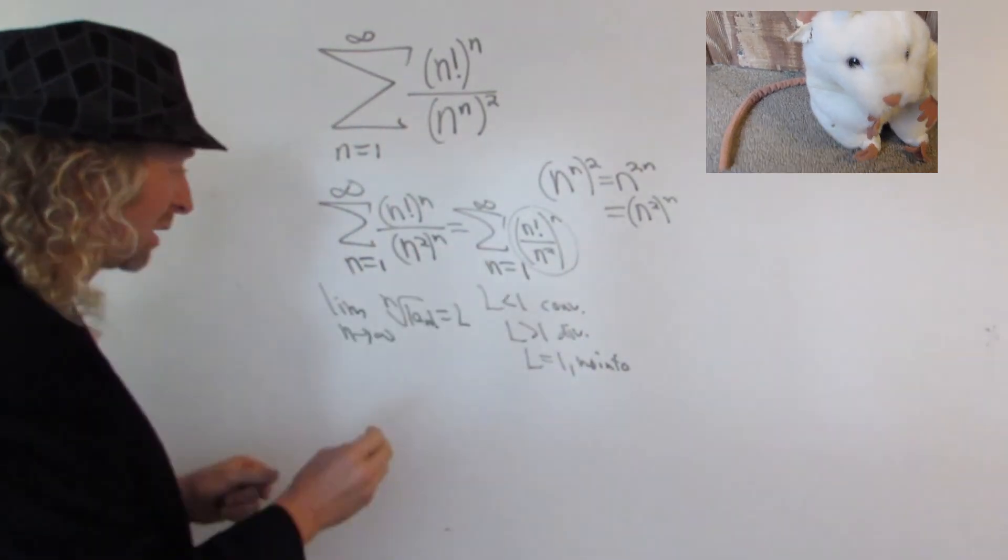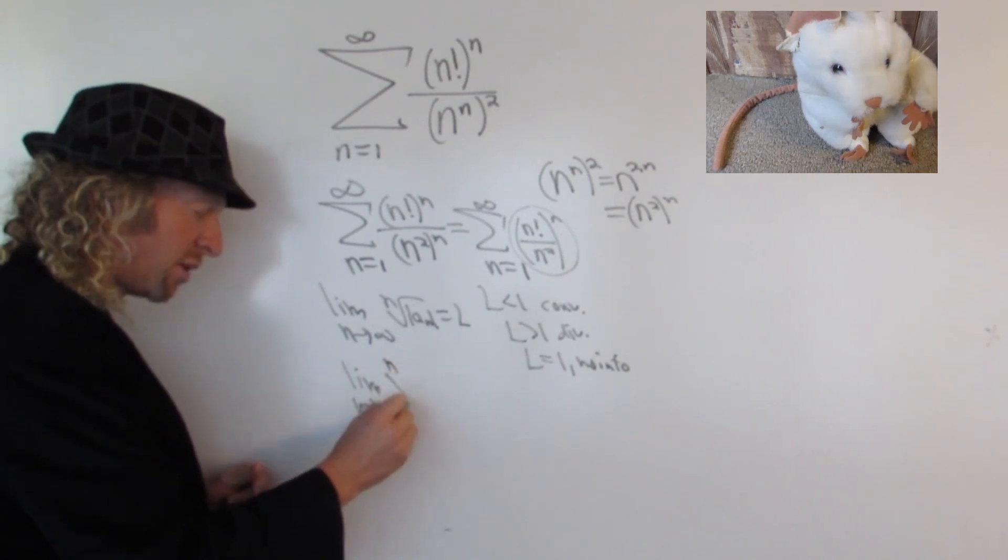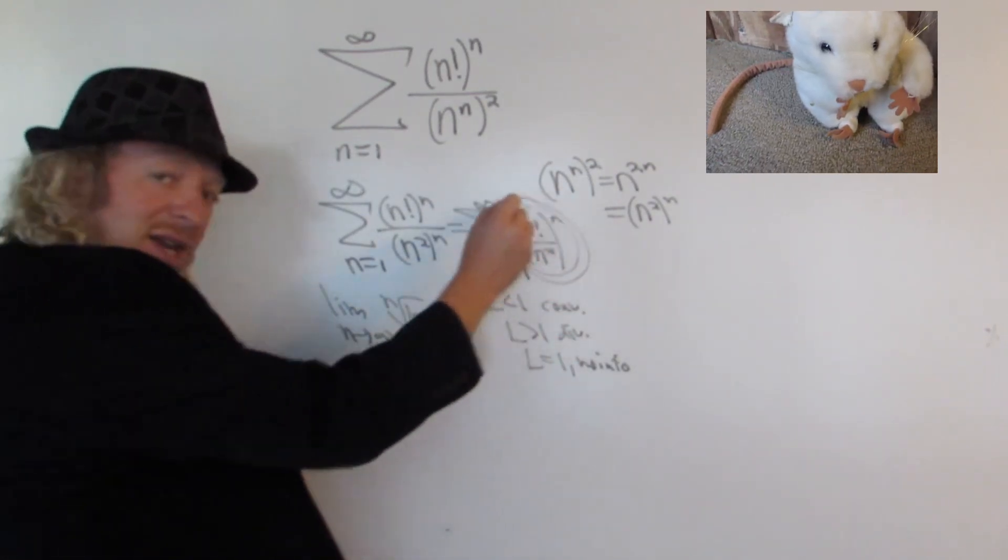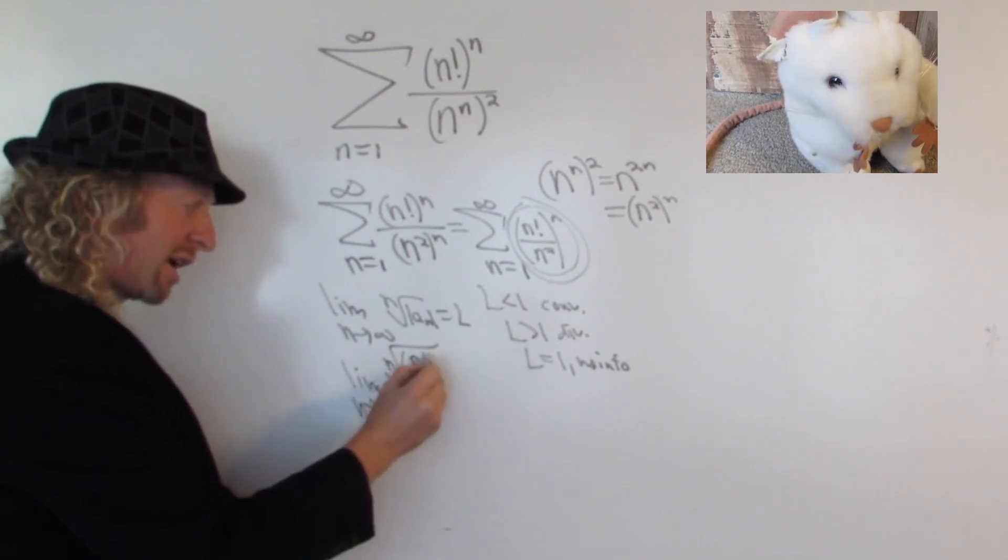So all we have to do is take the limit here. So we have the limit as n approaches infinity of the nth root of our a sub n, and this is our a sub n. So it's n factorial over n squared to the n.